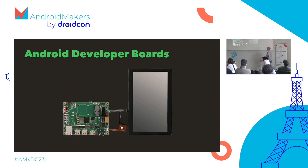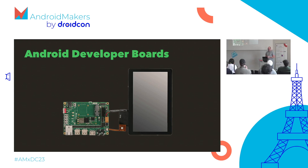This is how a developer board looks — this is the IMX6 from NXP. It's a very low-end board, actually. I think this one has only two cores and like half a gig of RAM. You can still run Android on it, maybe not 60 frames per second animations in Compose, but you can run Android on it. This is usually what you have on your desk once you get the developer board.